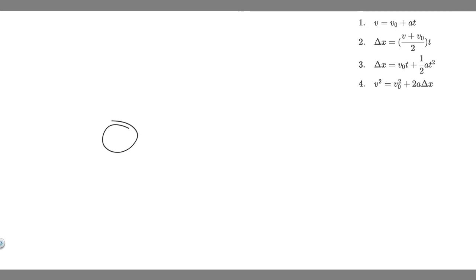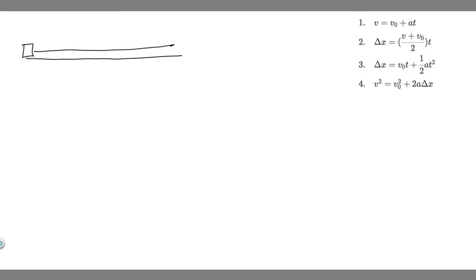There are two parts to this problem, but let's draw what's going on first. We have this aircraft on a runway — I'm just going to draw a box. Here it is at the beginning; it's going to travel some distance and take off at the end. At that endpoint, it's going to have a takeoff speed of 120 kilometers per hour, so its final velocity is 120 kilometers per hour.